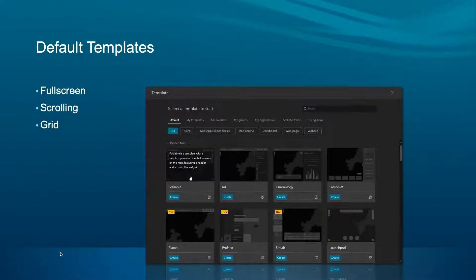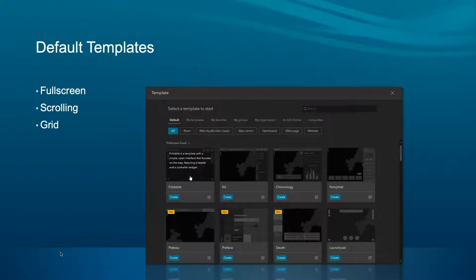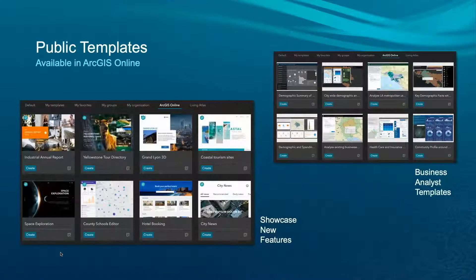Templates are the easiest way to get started. The default templates have three types: full screen, scrolling, and grid. You may use the full screen templates for apps like Web App Builder or dashboards. The scrolling template is for story-style web pages. Grid is for dashboards, but you can also build other things with easy drag and drop. The default templates are categorized in six groups including Web App Builder, Classic, map-centric, web page, and websites. Public templates are available under ArcGIS Online, created by the product team showcasing new capabilities in each release — highly recommended to check them out.